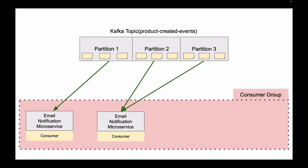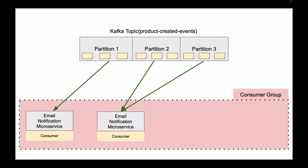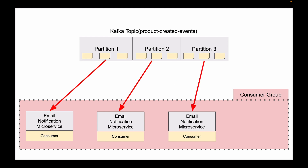This process of automatic partition reassignment is called rebalancing. It happens very quickly, but while partitions are being reassigned, consumers stop consuming messages from the topic for a moment. Rebalancing takes place every time a new consumer joins a consumer group and every time an existing consumer leaves the consumer group. If we decide to scale up our application even more and start one more Email Notification microservice, partition rebalancing will automatically take place again and partitions will be reassigned.